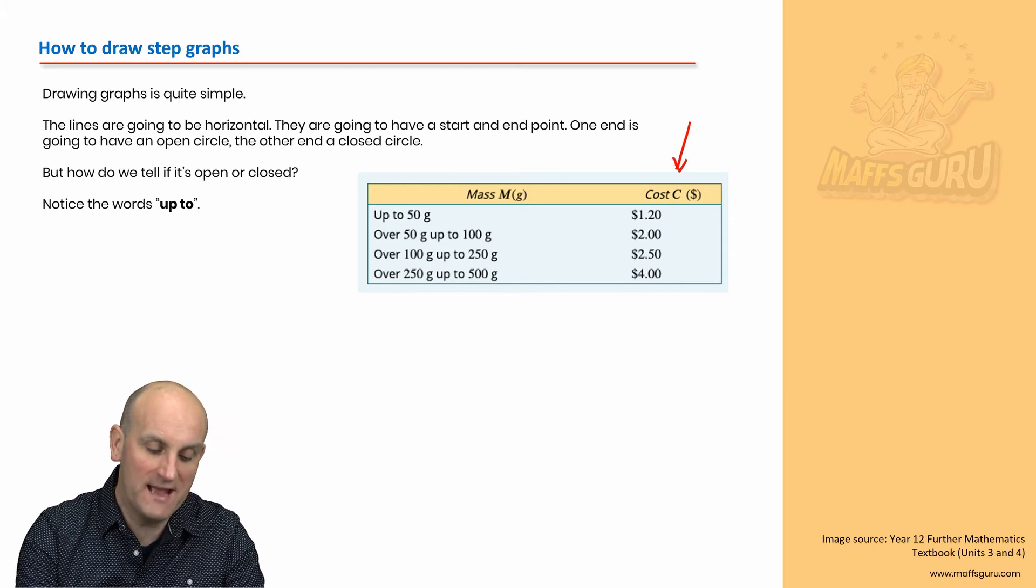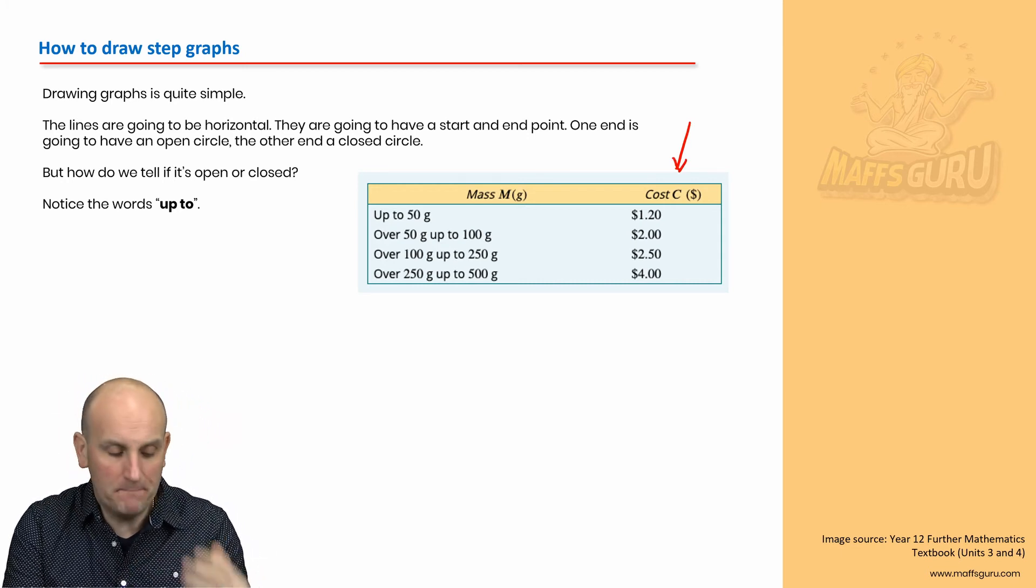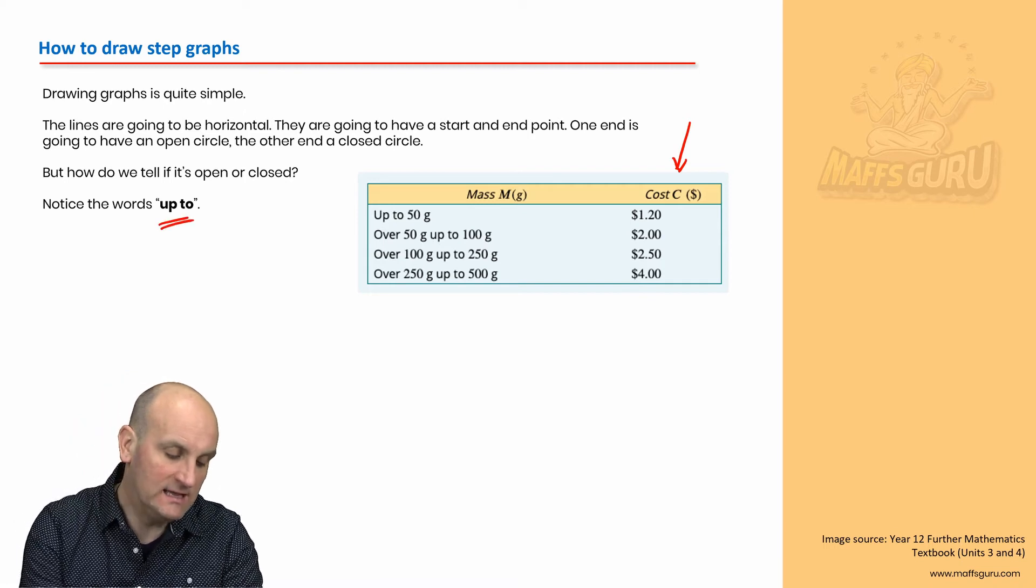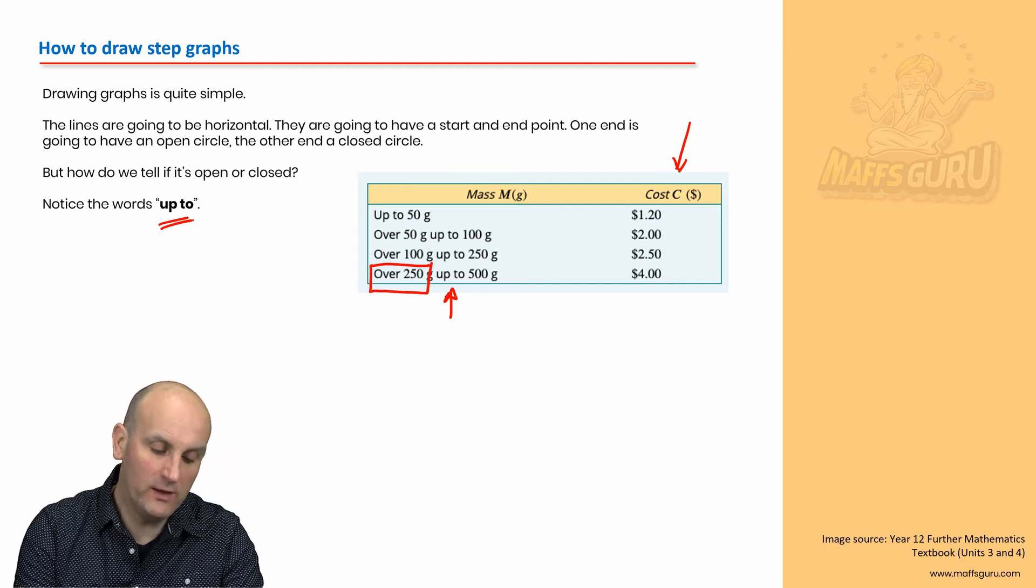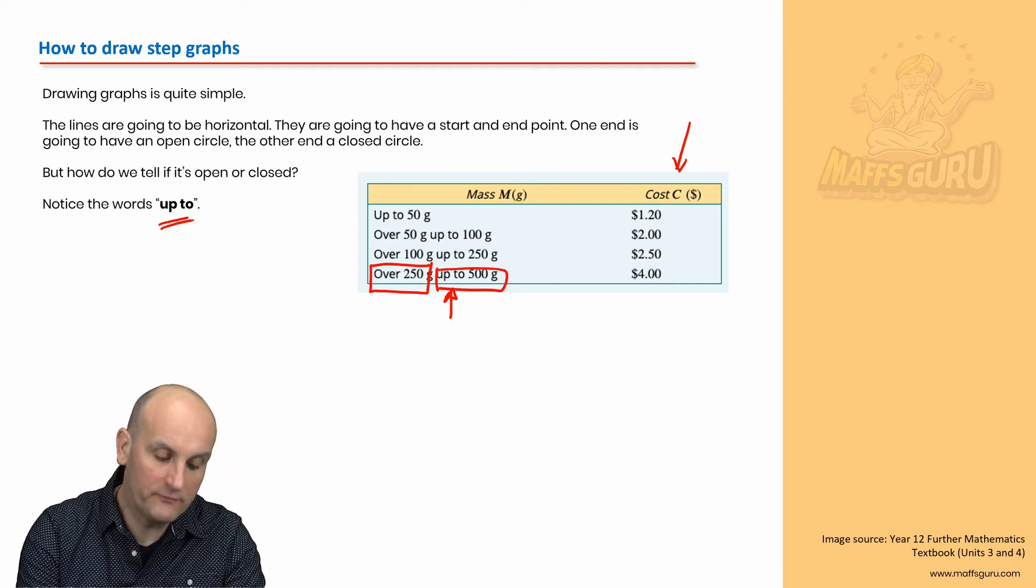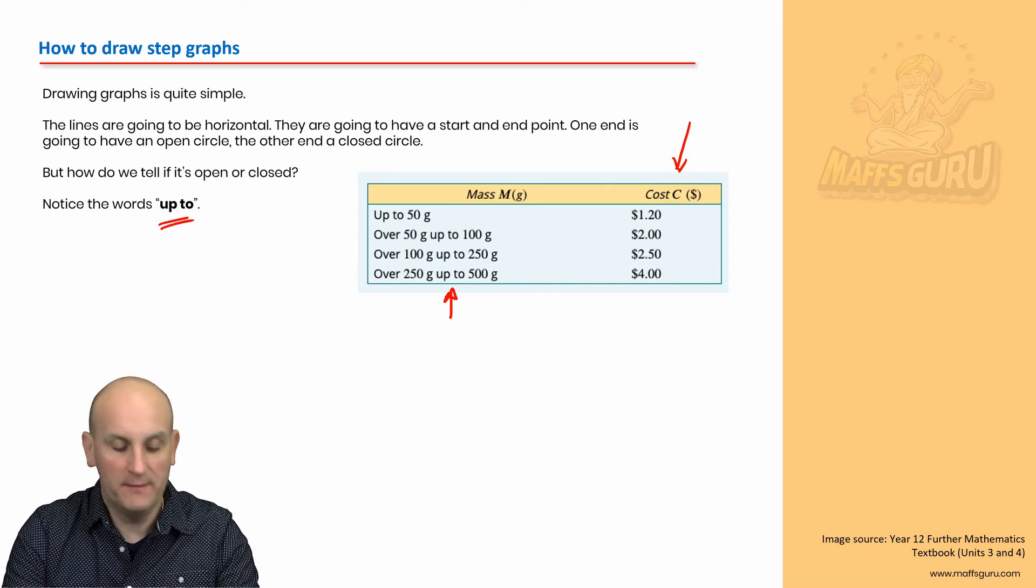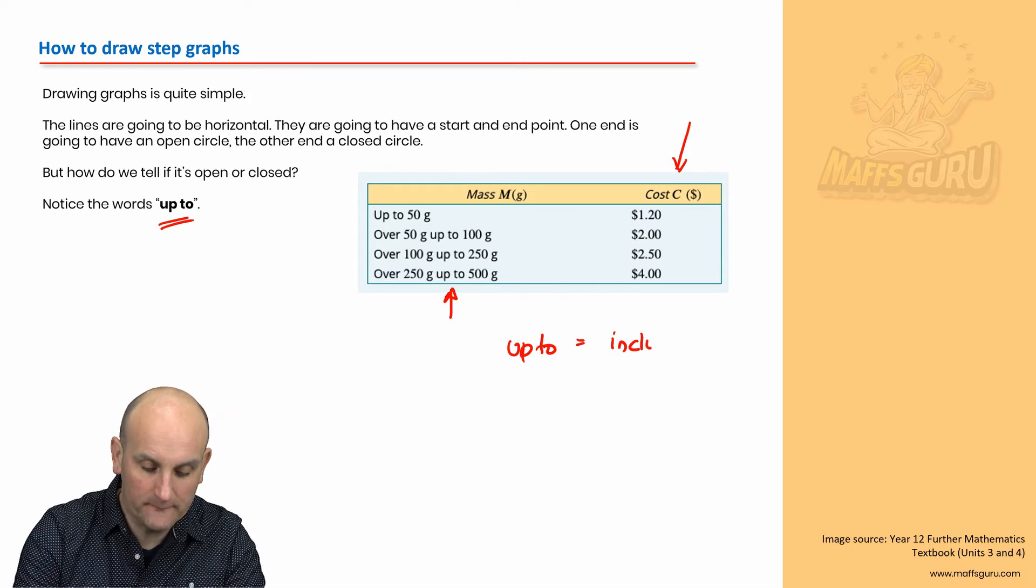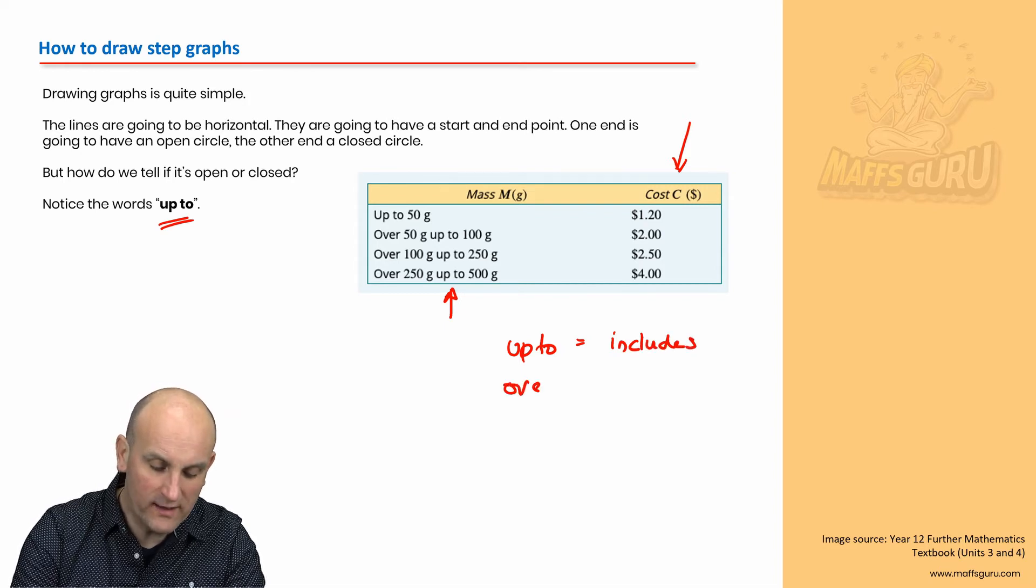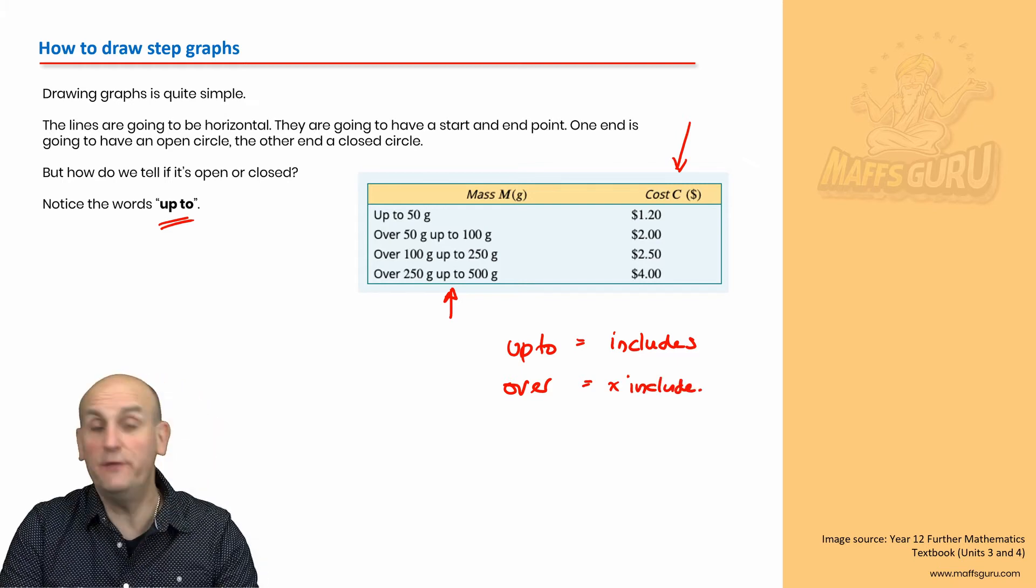Let's go back to the actual question that the Cambridge Further Maths textbook gave us. And it was this one here. As I said, it was a mass and cost of sending something. Where are the important words here? It is the word up to. So, if we look at over 250 grams, up to 500 grams, the language here is important. Because if it's up to, it means it includes.